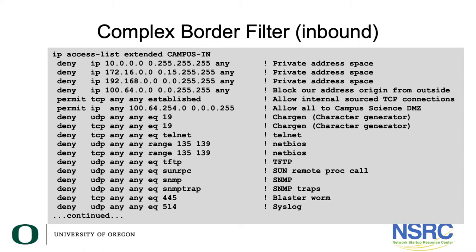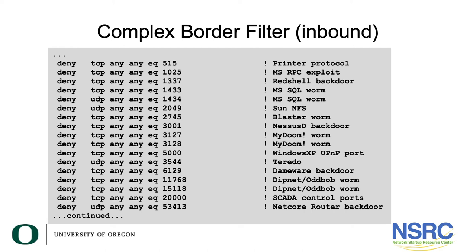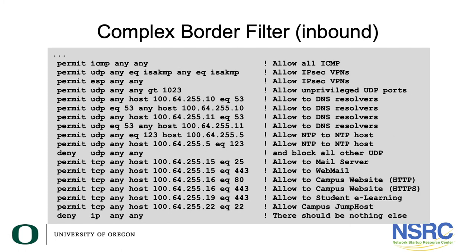I'm not going to go through it in detail, but you'll see elements from the simple filter and then lots of examples of some of the well-known ports that need to be blocked because of historical abuse. If we jump forward to the third slide, you will see some specific entries to allow IPSec VPNs. We're going to allow all of ICMP; of course we want to allow the unprivileged UDP ports; we're going to allow access for the DNS resolvers; we're going to allow network time protocol; and then specific access to various servers and services running on campus.